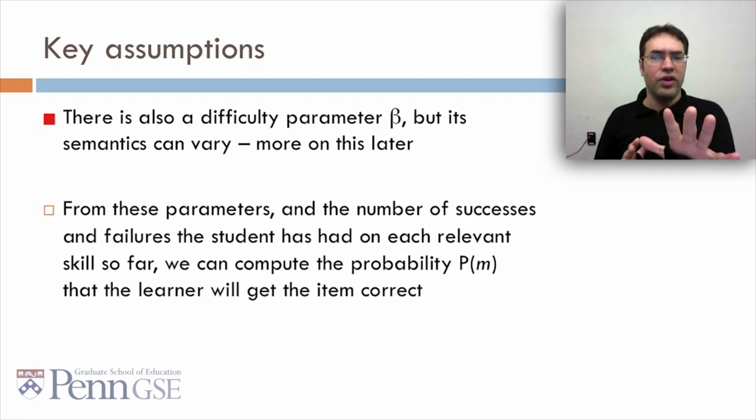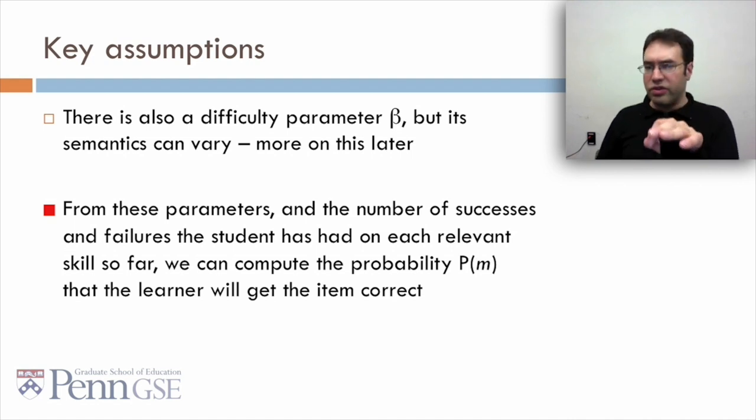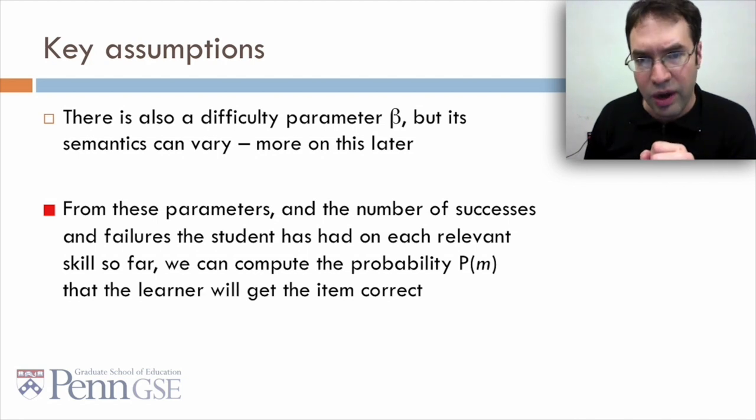PFA also has a difficulty parameter, beta, but its semantics can vary. More on this later. From these parameters and the number of successes and failures the student has had in each relevant skill so far, we can compute the probability, P of m, that the learner will get this item correct.